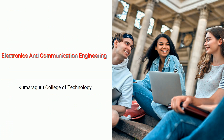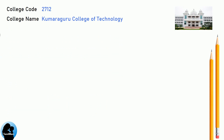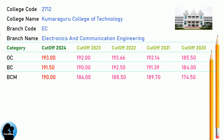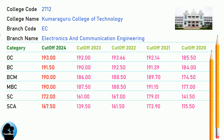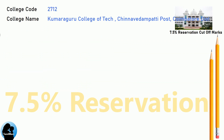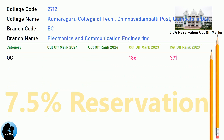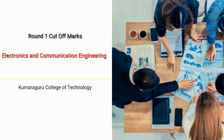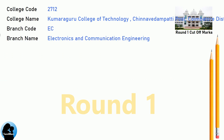DNA cutoff for Kumaraguru College of Technology in Electronics and Communication Engineering. DNA Round 1 cutoff and DNA Round 2 cutoff for Kumaraguru College of Technology in Electronics and Communication Engineering.